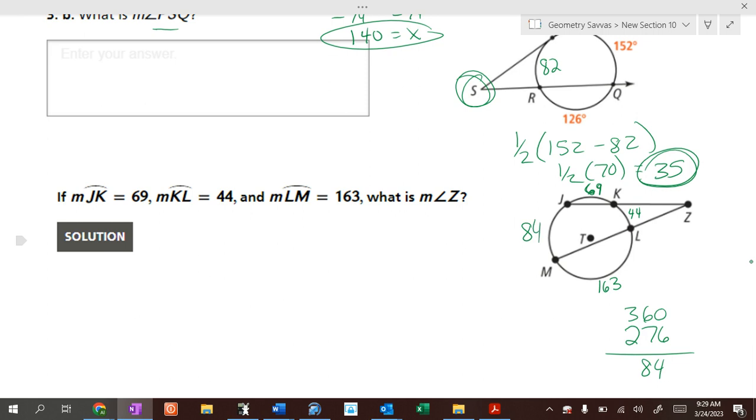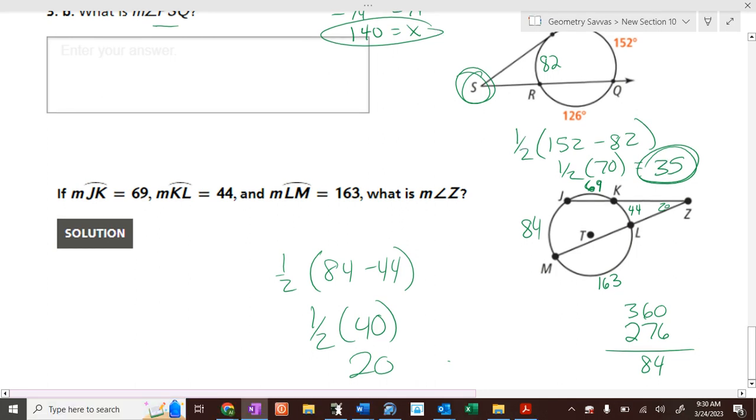Then what do we do with that 84? Put it in the formula. What's my formula? One half of 163 minus 84. Yep, and so that's one half of 40, and what is half of 40, Savannah? 20, and that's what our angle is. So hopefully you guys can do that now. Hopefully that's enough exercises to help you out. You will have a worksheet, and you'll get that done for next class, and then we'll move on from this next time.